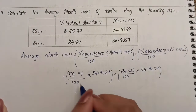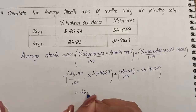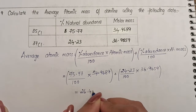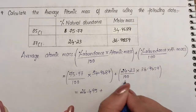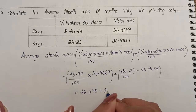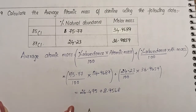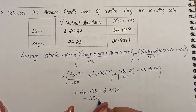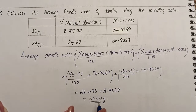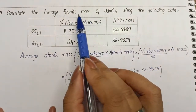When you simplify this entire expression, you get 26.495 plus 8.9568, and summing these gives you 35.45 grams, which is the average atomic mass of chlorine.